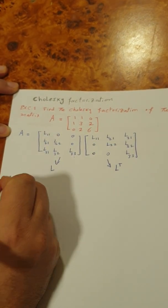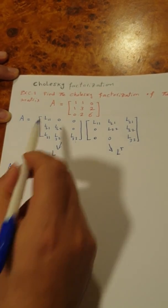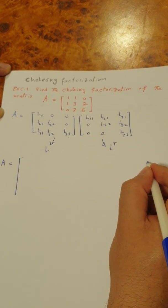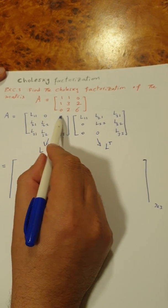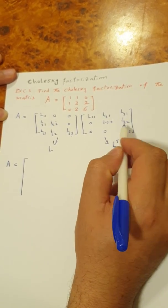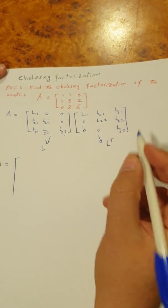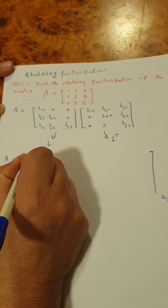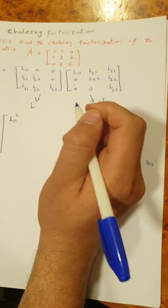If we multiply these two matrices together, we are multiplying a 3×3 matrix by a 3×3 matrix, which gives a 3×3 result. Each row of one matrix is multiplied by each column of the other. For the first element, multiplying the first row by the first column gives L11 squared plus zero plus zero, so the result is L11 squared.